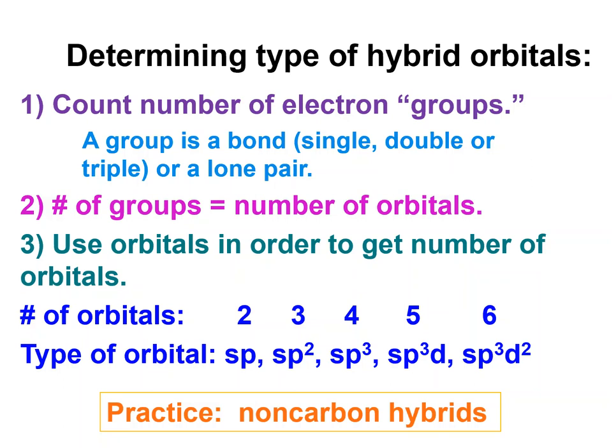So how do we take our Lewis dot structures and decide what kind of hybrid orbitals it has? You do your Lewis dot structure and you count the number of electron groups again. And then, the number of groups is equal to the number of orbitals, and I'm talking about the hybrid orbitals. And then, from the number of hybrid orbitals, you can get the type of orbital.